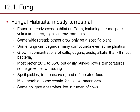Fungal habitats are mostly terrestrial, found in nearly every habitat on Earth including thermopools, volcanic craters, and high-salt environments. Some fungi can degrade many compounds, even certain plastics. They grow in concentrations of salt, sugars, acids, and alkalis that would kill most bacteria. Most prefer 20–35°C environments but can survive at lower temperatures, and some grow below freezing. Most fungi are aerobic, though some yeasts are facultative anaerobes, and some obligate anaerobes live in the rumen of cows.